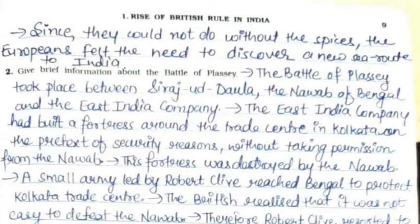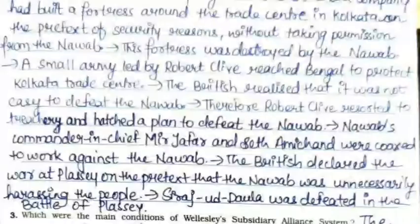Second: Give brief information about the Battle of Plassey. The Battle of Plassey took place between Siraj-ud-Daula, the Nawab of Bengal, and the East India Company. The East India Company had built a fortress around the trade center in Calcutta on the pretext of security reasons without taking permission from the Nawab. The fortress was destroyed by the Nawab. A small army led by Robert Clive reached Bengal to protect the Calcutta trade center.